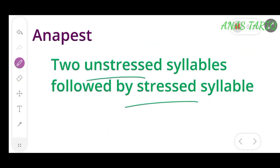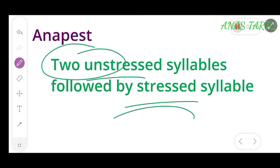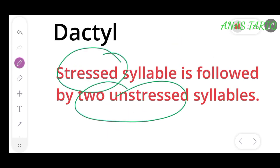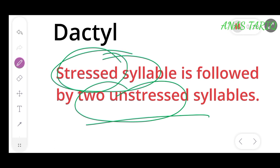So these are anapest and dactyl: in anapest, two unstressed syllables are followed by one stressed syllable, while in dactyl, one stressed syllable is followed by two unstressed syllables. That is all about anapest and dactyl. Thank you very much for watching.